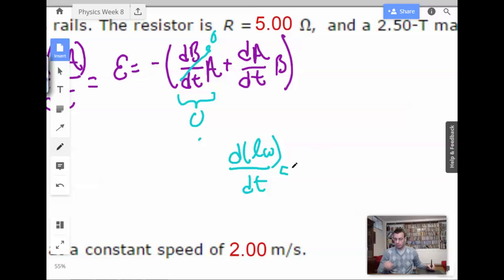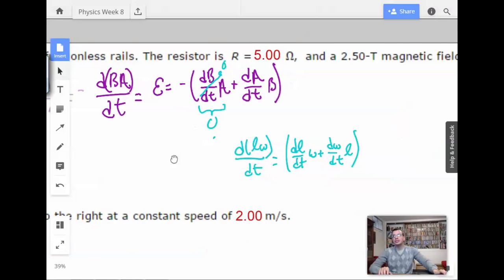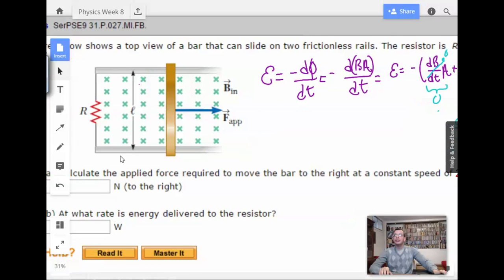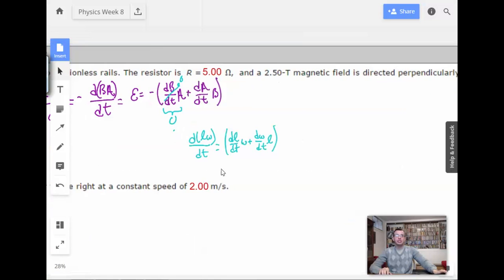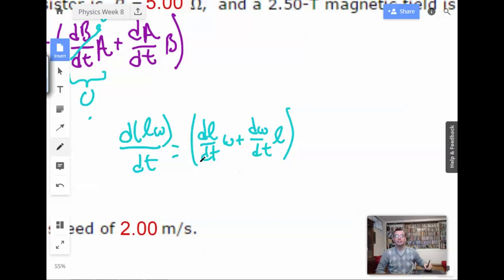I'm going to call area length times width. And then do the product rule one more time. So, what we're going to get is dL/dt times width plus dw/dt times length. Well, let's see here. I'm going to call this the length. And this guy right here, the width. So, the width is changing with respect to time because it's moving along. But the length is the same. So, this guy is going to be zero. So, this is going to be L dw/dt.